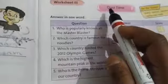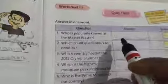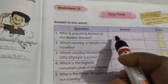This is also your C work — today's C work. Now let us come to next: worksheet number 3 — quiz time. You have to give the correct answer. Who is popularly known as Master Blaster? Sachin Tendulkar is the Master Blaster.